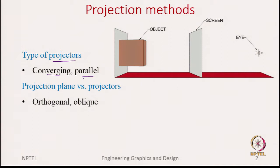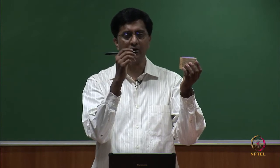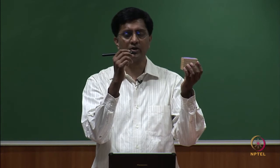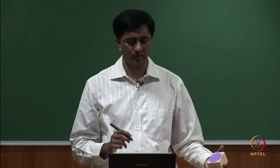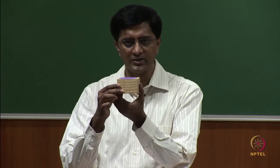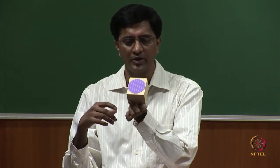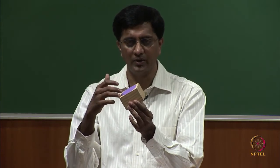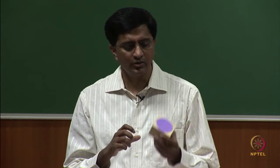The second category depends on how the projection plane and projection lines are oriented — specifically, whether the projection lines pass through the projection plane perpendicularly or not. If they are perpendicular, we call them orthogonal or orthographic projections. If not perpendicular but still parallel, we call them oblique projections. The last category concerns the orientation of the projection plane relative to the object — parallel, perpendicular, or inclined.